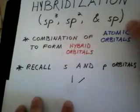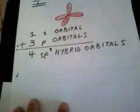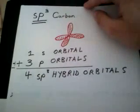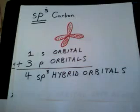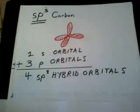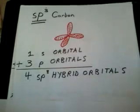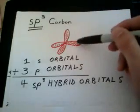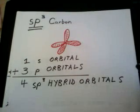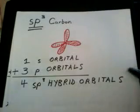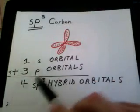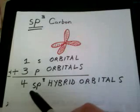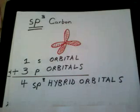I'm going to go through each hybridization individually, starting with SP cubed, and I'm going to choose carbon for all three hybridizations. Carbon is capable of all three — SP cubed, SP squared, and SP. Each of these red lobes represents one SP cubed orbital. The SP cubed orbitals are formed by combining one S orbital and three P orbitals to make four SP cubed hybrid orbitals.